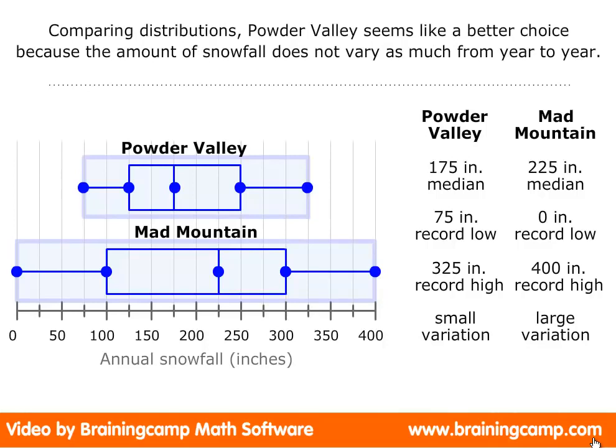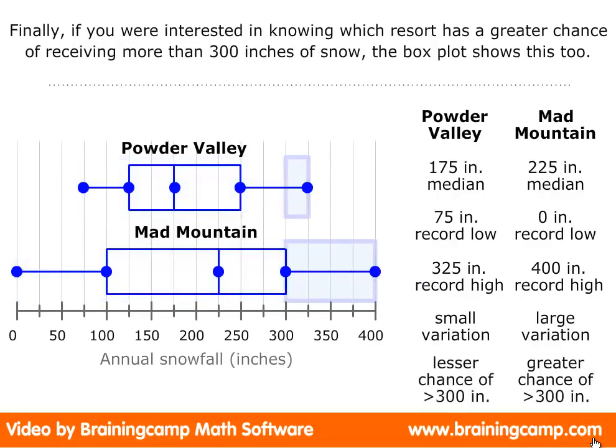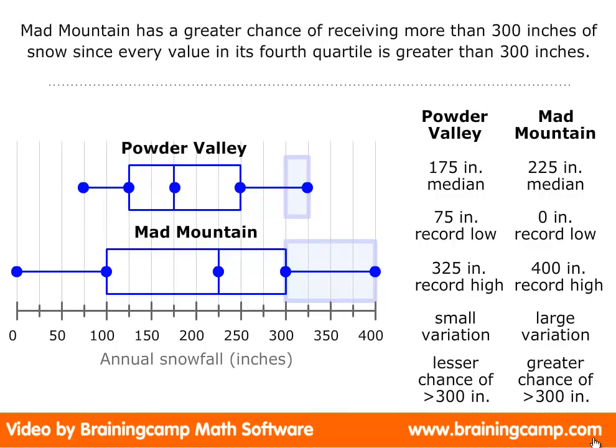Comparing distributions, Powder Valley seems like a better choice, because the amount of snowfall does not vary as much from year to year. Finally, if you were interested in knowing which resort has a greater chance of receiving more than 300 inches of snow, the box plot shows this too. Mad Mountain has a greater chance of receiving more than 300 inches of snow, since every value in its fourth quartile is greater than 300 inches.